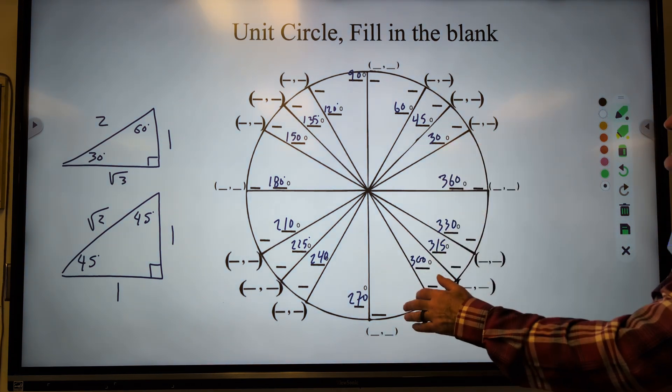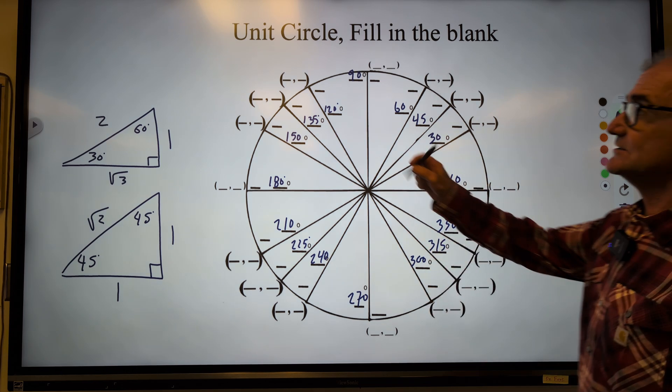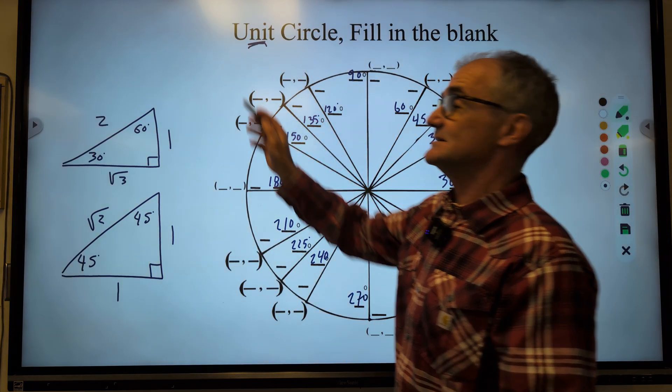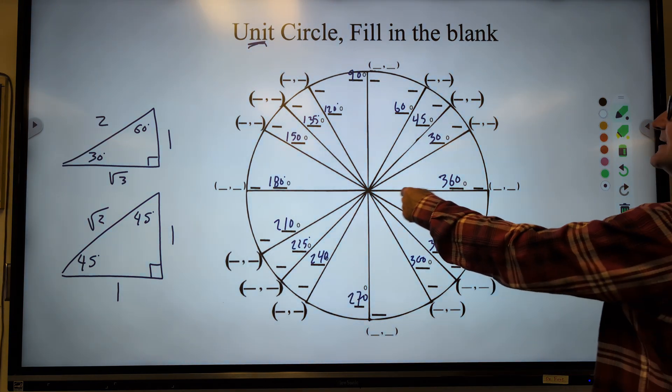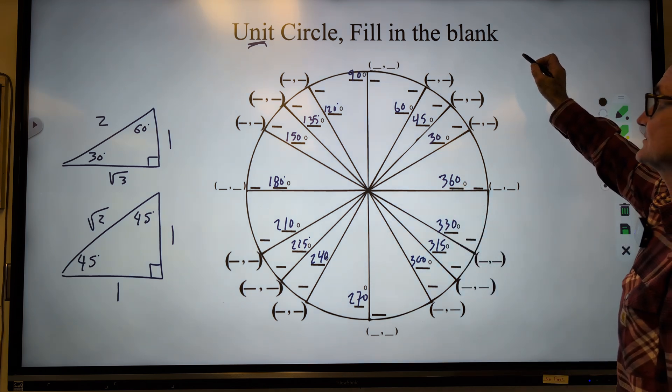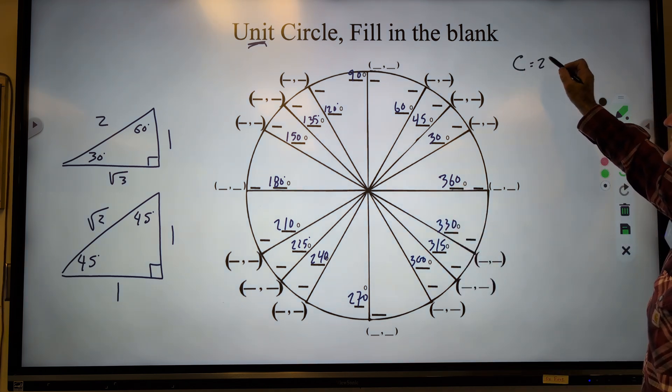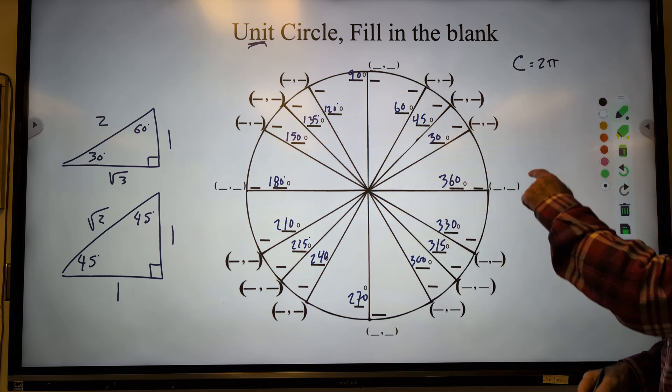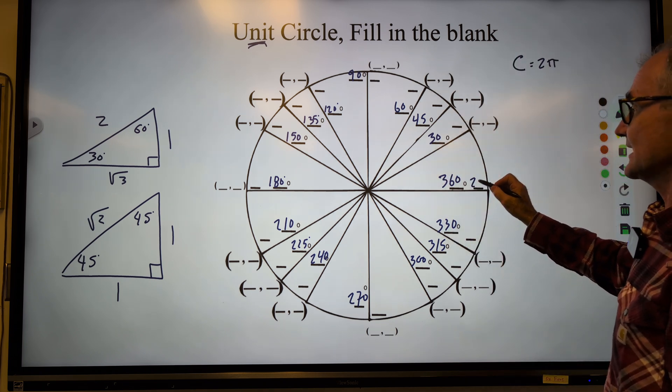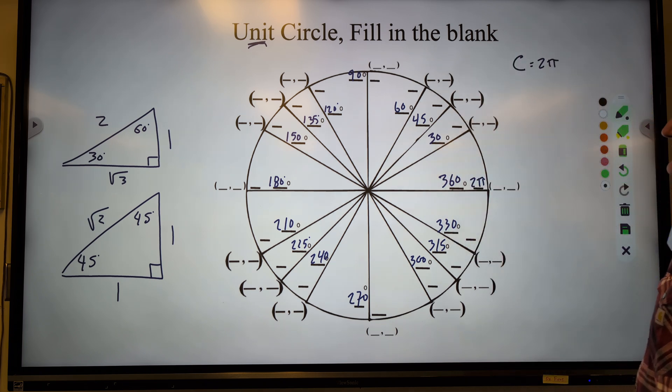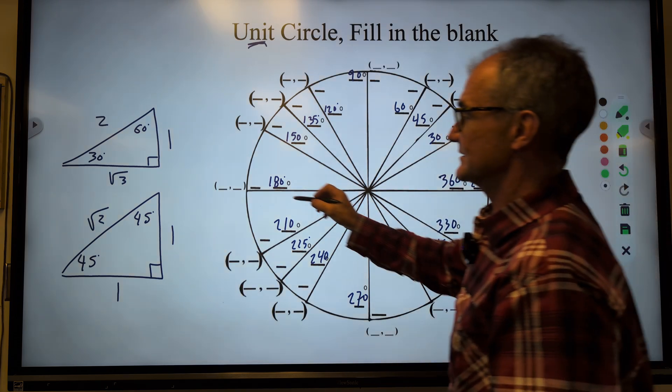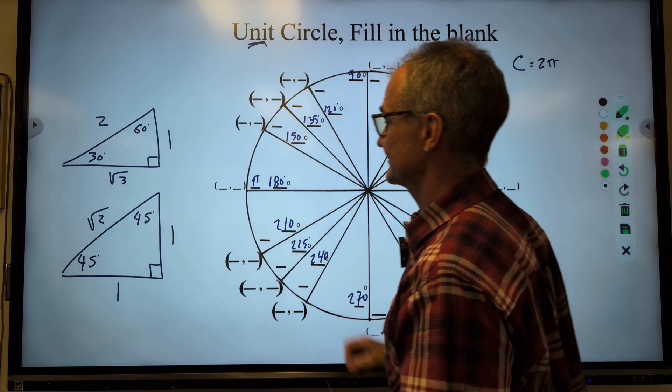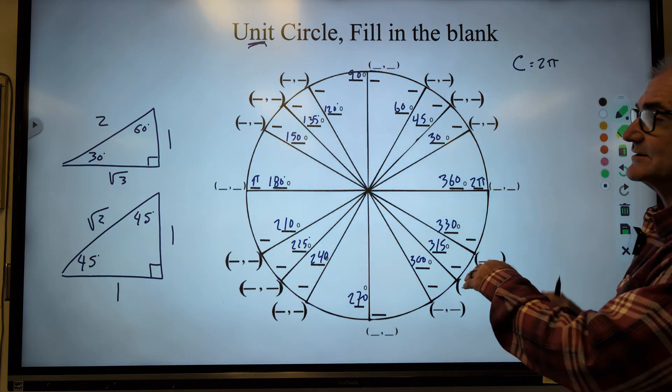Okay, now we're going to look at the radian measure. It is a unit circle. Unit, by definition, means one unit. So the radius is one unit long. Circumference is equal to 2 pi r, but r is equal to 1. So all the way around is going to be 2 pi. So halfway around is going to be pi.